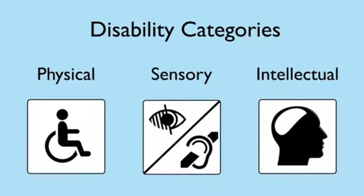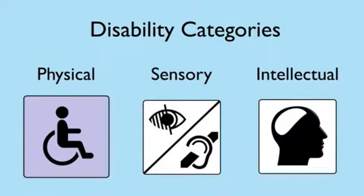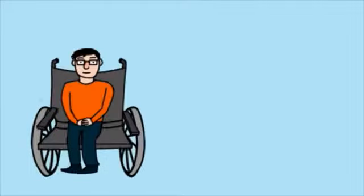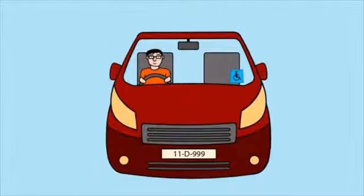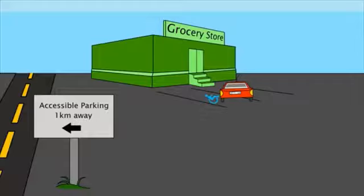Let's begin with physical disability. It is a noticeable disability, unlike some disabilities which can be hidden. In this segment we will look at everyday life from the perspective of someone with physical disabilities. This is Tom. Tom has a physical disability which requires him to use a wheelchair. He's on his way to the grocery store and needs to park in an accessible parking bay to enable him to access the shop easily.